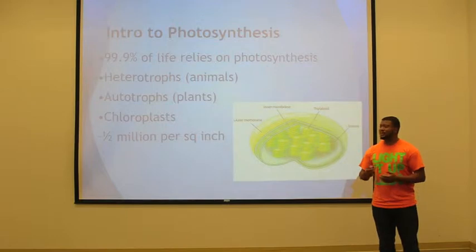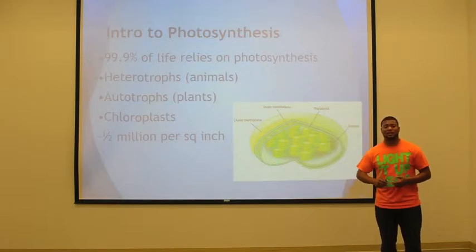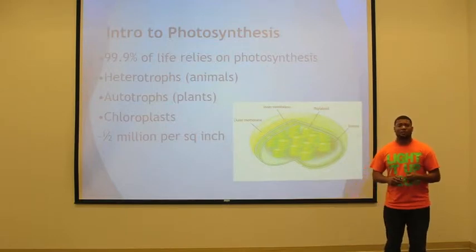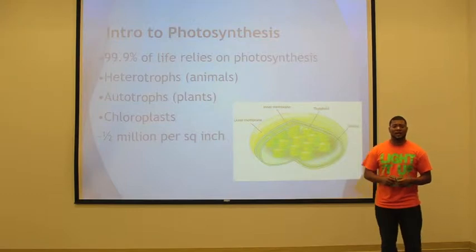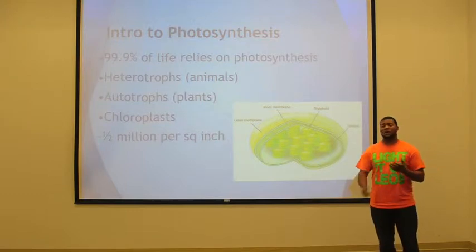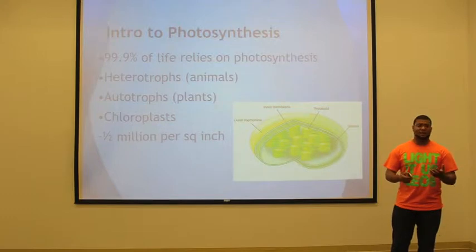Plants contain chloroplasts, which is actually what gives them their green color. Chloroplasts reflect green light, and there are about half a million chloroplasts on a leaf in a plant.